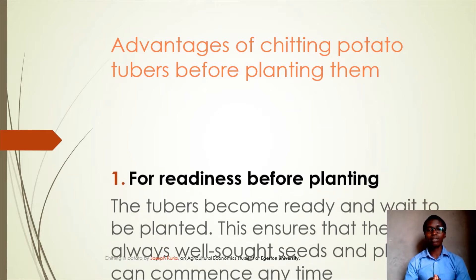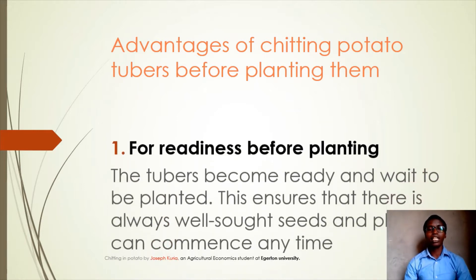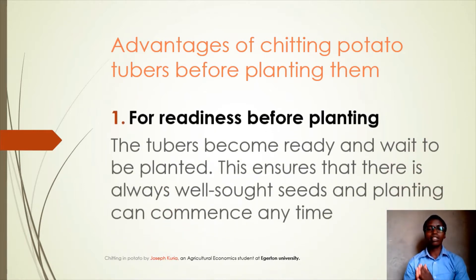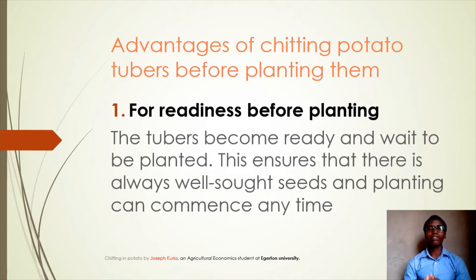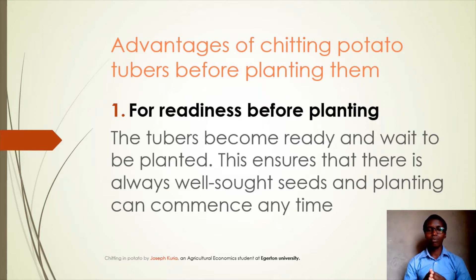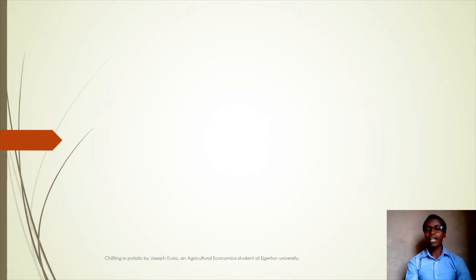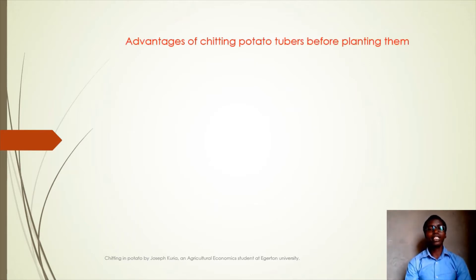So why do we do chitting? The advantages of chitting potato tubers before planting is that we need them to get ready for planting. The tubers become ready and wait to be planted. This ensures that there are always well-stored seeds for planting, and planting can commence at any time that you want.